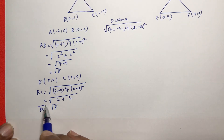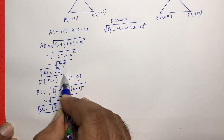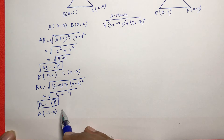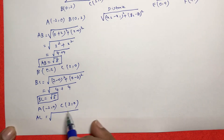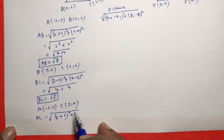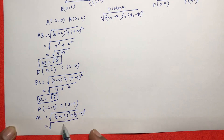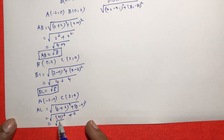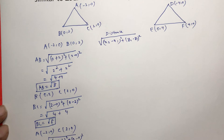Now AC: A is (-2, 0) and C is (2, 0). So AC distance is under root of (2 plus 2) whole square plus (0 minus 0) whole square, which is 4 squared plus 0, so AC is root 16.